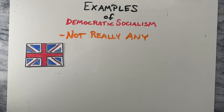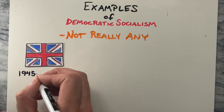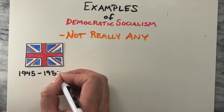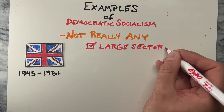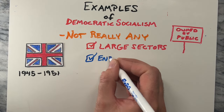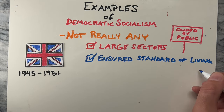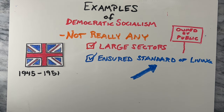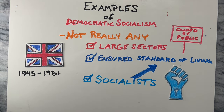Historically, an example of a democratic socialist government was in the United Kingdom between 1945 and 1951. Large sectors of the economy were taken into public ownership. The government took responsibility for ensuring minimally decent standards of living, and those who implemented this vision self-identified as socialists.